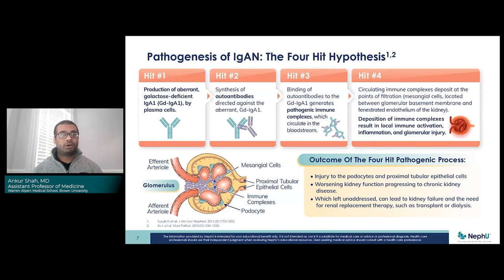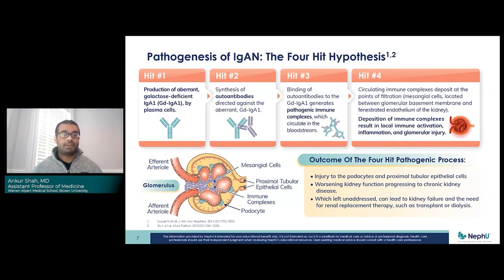Your body then develops autoantibodies against that abnormal IgA. It's used to seeing its normal IgA, but when it sees this galactose-deficient IgA, it recognizes it as an abnormal protein and attacks itself — that's the autoimmune element. The binding of autoantibodies to that galactose-deficient IgA results in immune complexes: two antibodies come together, form an immune complex, and float around in the bloodstream. When these reach the kidneys, they deposit at the point of filtration — the mesangial cells, right at the glomerulus — resulting in local immune activation, inflammation, and glomerular injury.